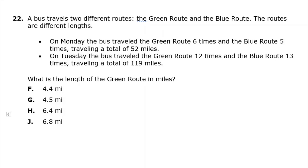There's multiple ways to work through these problems. Guess and check will usually work, but I'm going to show you how to work it out using a system of equations. Monday the bus traveled the green route six times, so six times the green route and five times the blue route totals 52 miles.